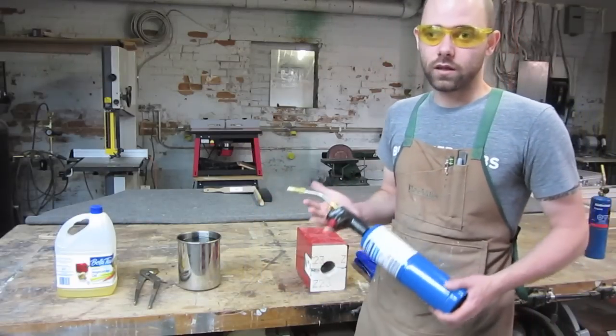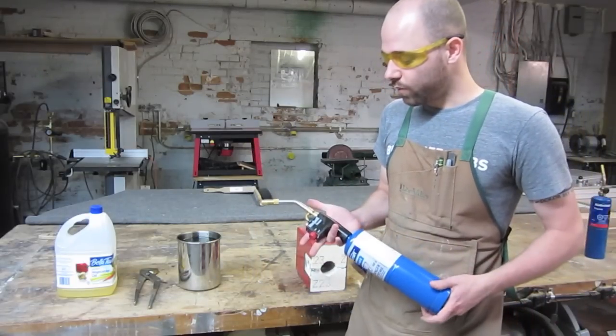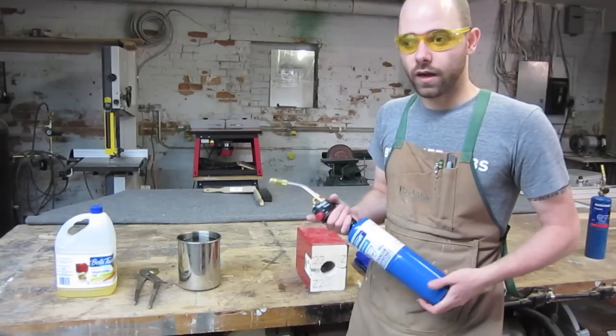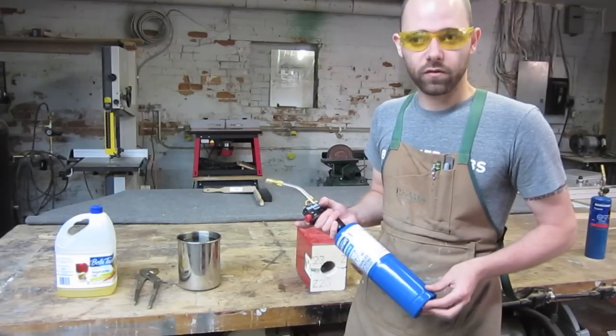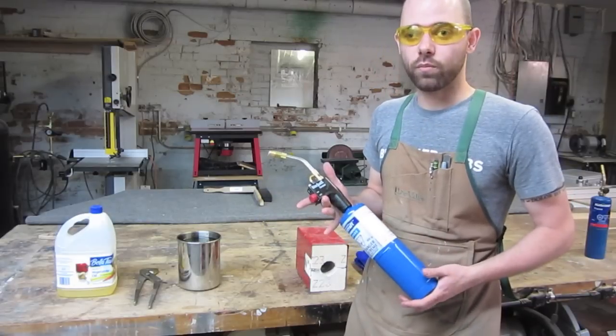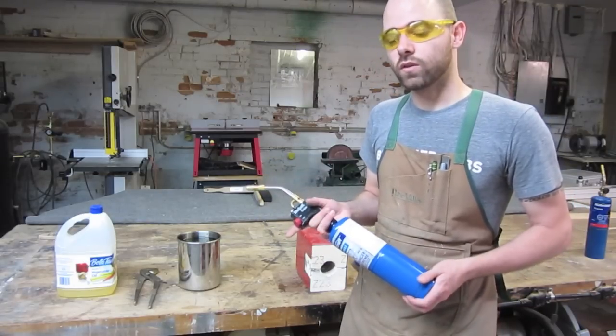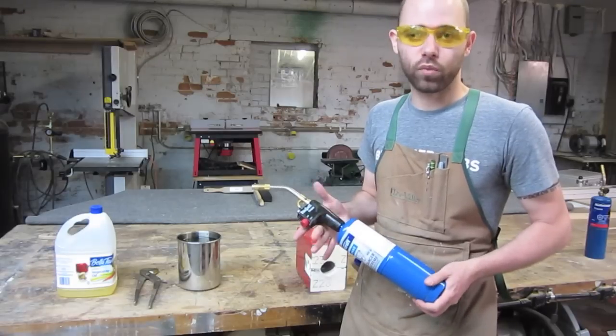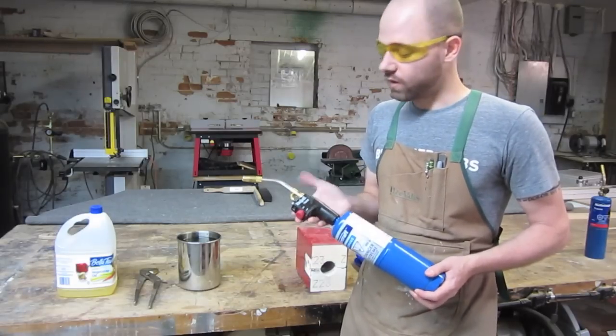Then you're going to need a torch. I use a Bernzomatic TS-4000, which is a relatively expensive torch at about $40. It works very well and it works with both MAP gas and propane. So if you need a hotter flame for brazing or something else, then this is a great torch.